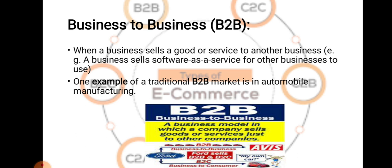The second type is Business to Business. One business sells goods to another business, or one business buys goods from another business. This mostly occurs in automobile companies — for example, a company making cars has different parts, and those parts are taken from other companies. If a business sells goods or services to another business, such as selling software as a service for other businesses to use, that is known as B2B, Business to Business.